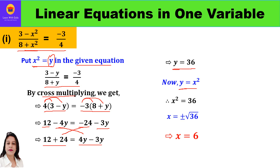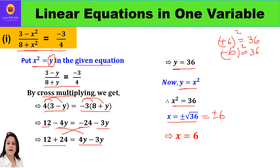Since y was actually x², we have x² = 36, so x = ±6. Since the question asks for only the positive value, x = 6. To summarize the method: convert the quadratic into a linear equation, cross multiply to solve, get the substituted variable's value, then substitute back to the quadratic form to find x.